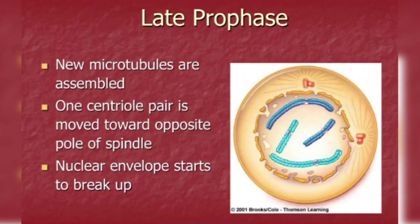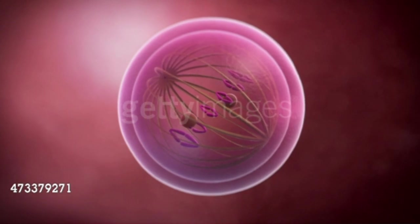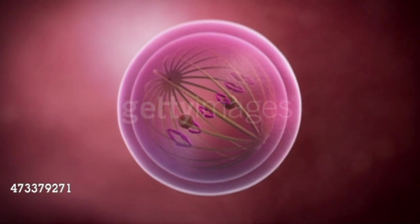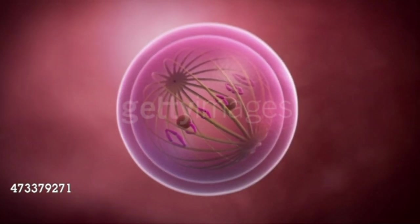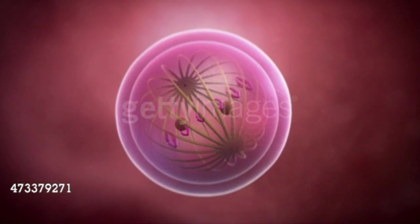Late prophase: 1. Nearly complete disappearance of Golgi bodies, nuclear membrane, and nucleolus. 2. Further condensation of chromosomes. 3. Formation of spindle. 4. Two types of spindle fibers: A. Chromosomal, discontinuous fibers extend from pole to kinetochore. B. Continuous, interpolar fibers extend pole to pole.